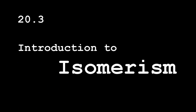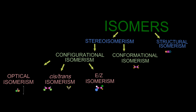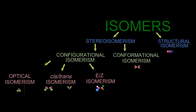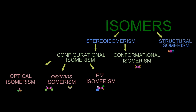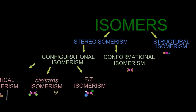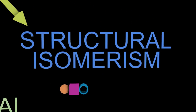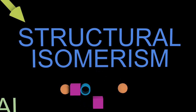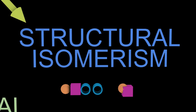20.3 Introduction to Isomerism. Future videos will have more detail, but isomers are split into two types initially: stereoisomers and structural isomers. Structural isomers are made by breaking bonds in a molecule and then rearranging the atoms in a different order.